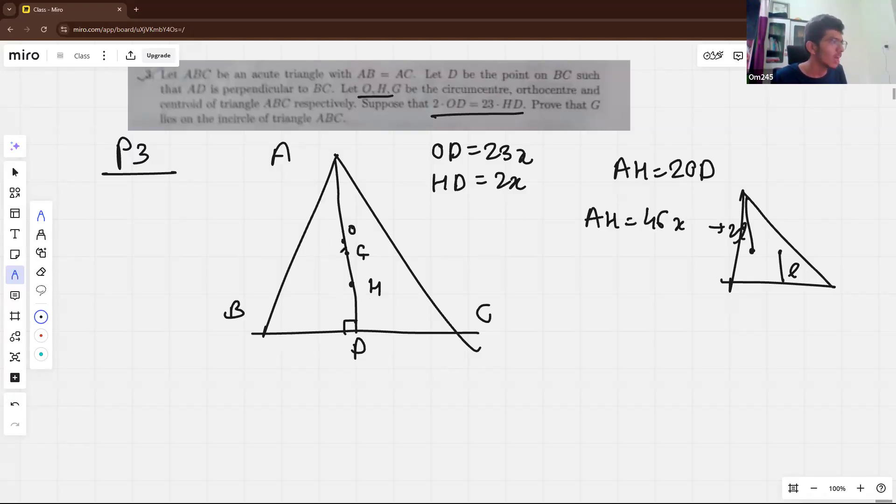Now, because this is 2X and this is 23X, this whole segment will be 21X. And we also know that OG by GH is equal to actually one by two. So we divide that in that ratio and we get this 7X and 14X. And also AH minus OH will give us AO equal to 25X. You can do calculation. That's simple calculation. So now we convert all ratio in terms of X.